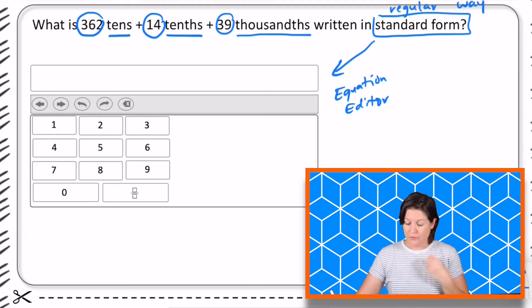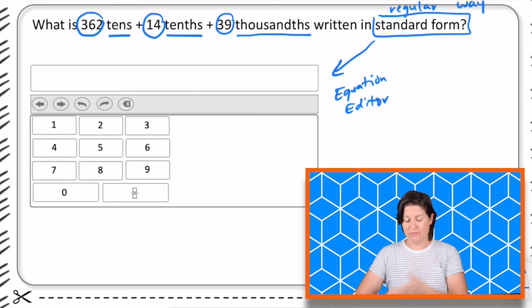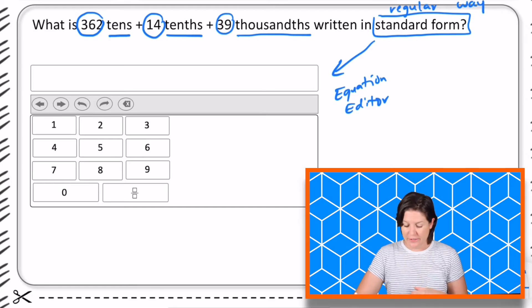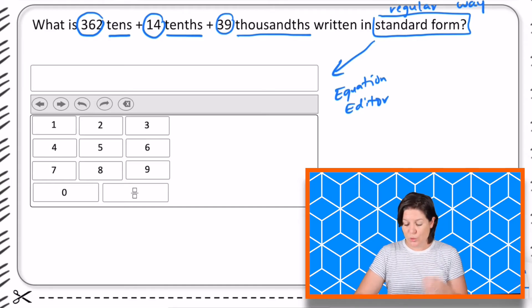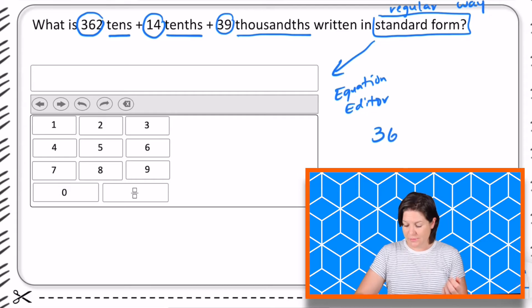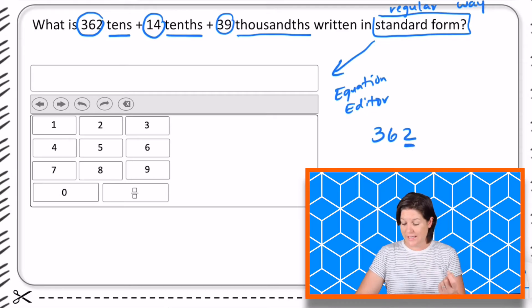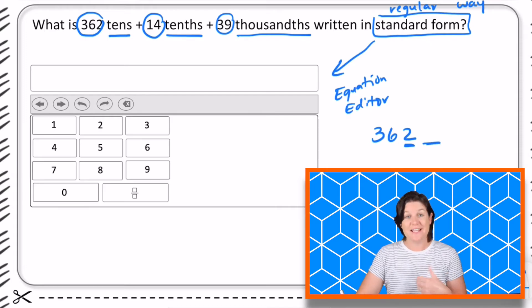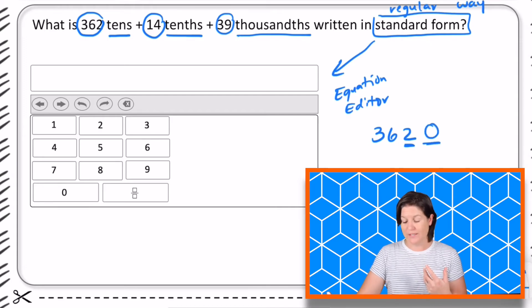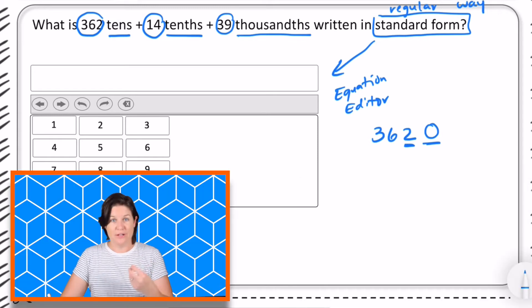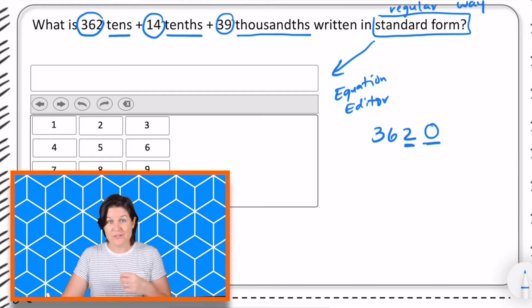The way I'm going to tackle this one is to make sure that I have the values over here correctly. So 362 tens means 362 and that digit 2 needs to be in the tens place, which means I need something in the ones place, a zero right there. Okay that would be the value 362 tens is the same thing as 3620.